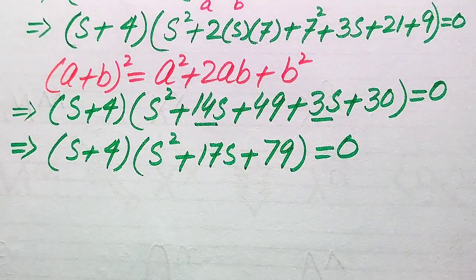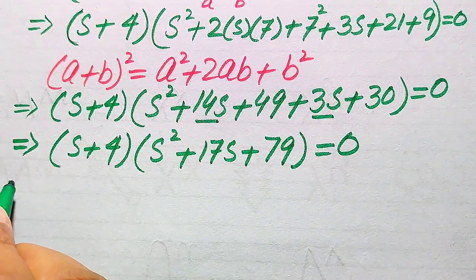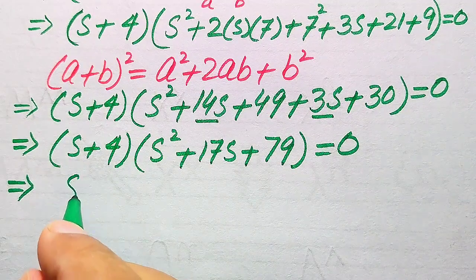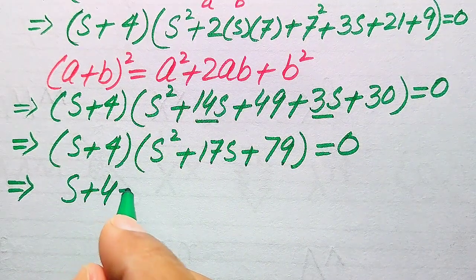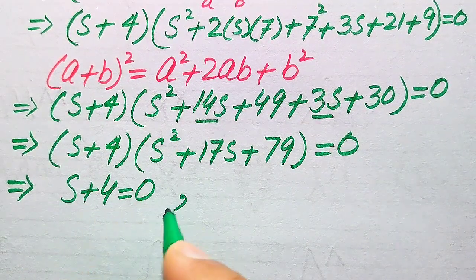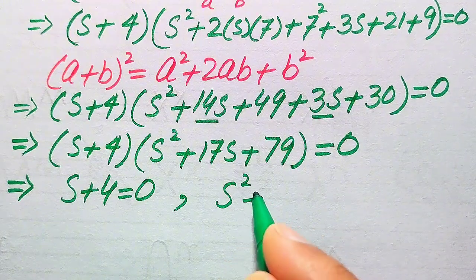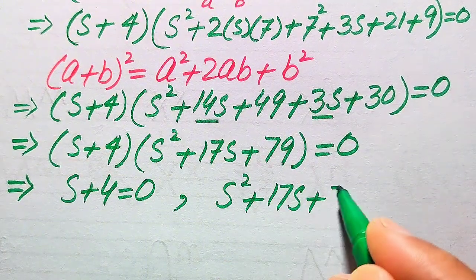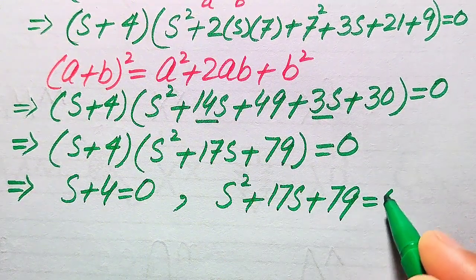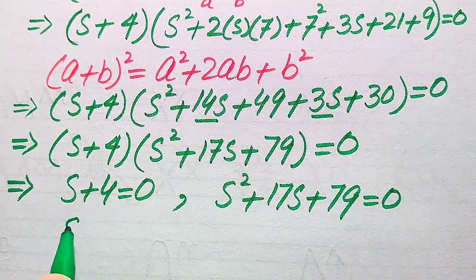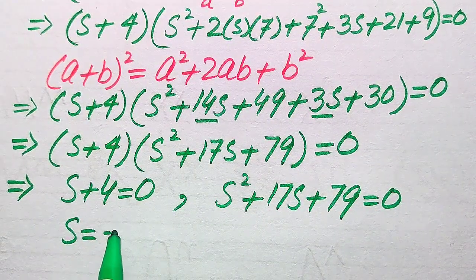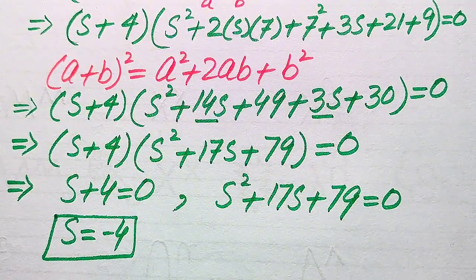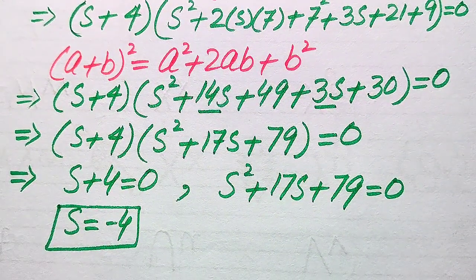We divide this into two cases. Case 1: s + 4 = 0, giving s = −4. This is the first real root of the equation. Case 2: s² + 17s + 79 = 0, which is a quadratic equation we need to solve for the remaining roots.